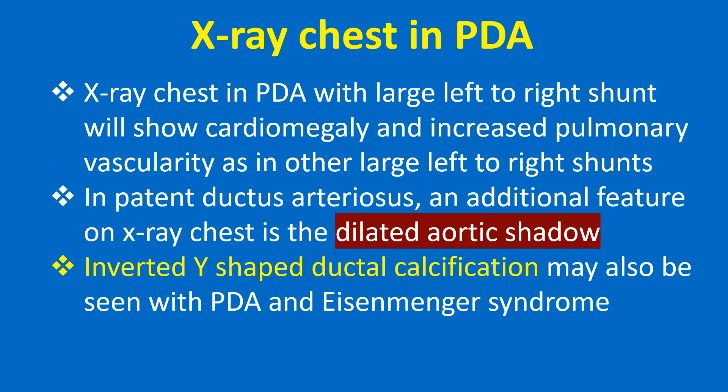X-ray chest in PDA with large left-to-right shunt will show cardiomegaly and increased pulmonary vascularity, as in other large left-to-right shunts. In PDA, an additional feature on chest X-ray is the dilated aortic shadow. Inverted Y-shaped ductal calcification may also be seen with PDA and Eisenmenger syndrome.